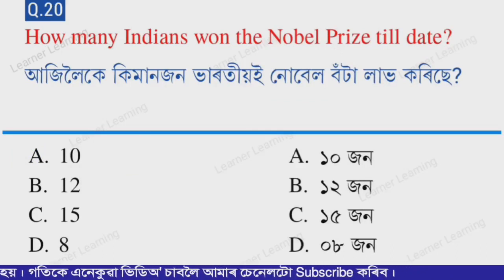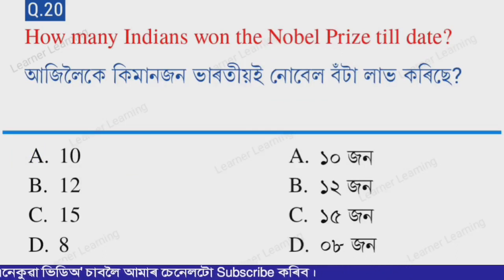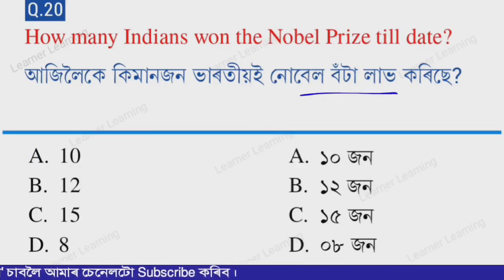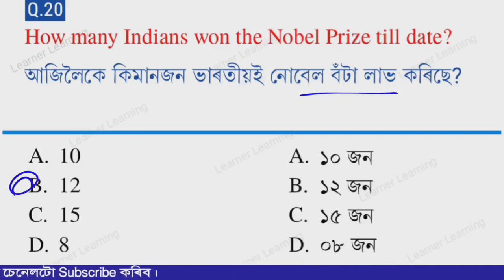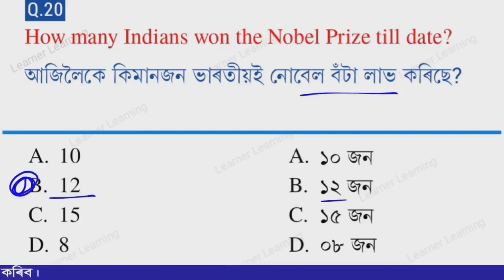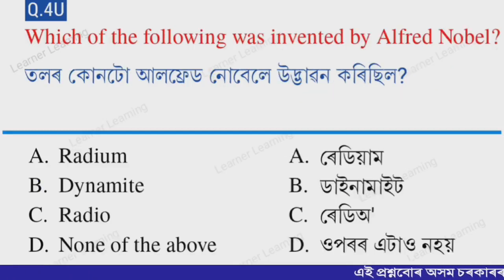Next question: How many Indians have won the Nobel Prize till date? The correct option is option B — 12. Twelve Indian citizens or persons of Indian origin have received the Nobel Prize till date. This is also a very important question.